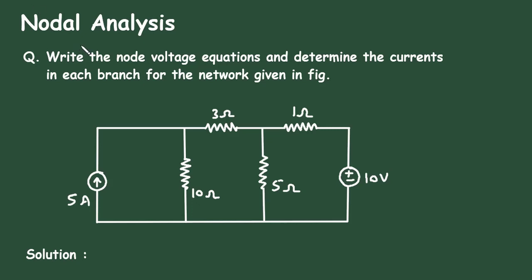To get the free nodes of electrical circuit, check the link in the comment section and install the app for free. Nodal Analysis: Write the node voltage equations and determine the currents in each branch for the network given in the figure. Here in this circuit, we have to determine node voltage equations and determine the branch current by using nodal analysis.